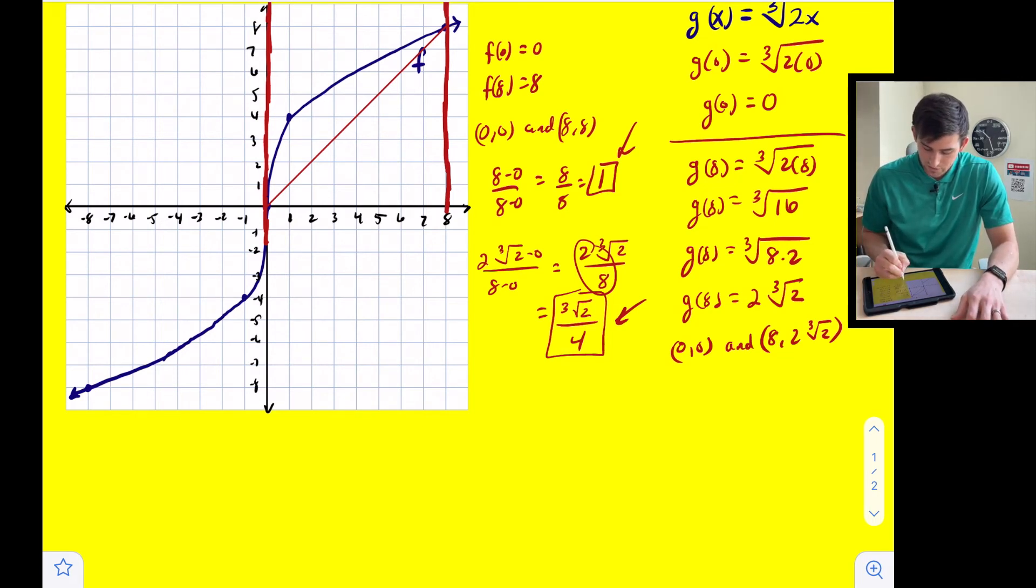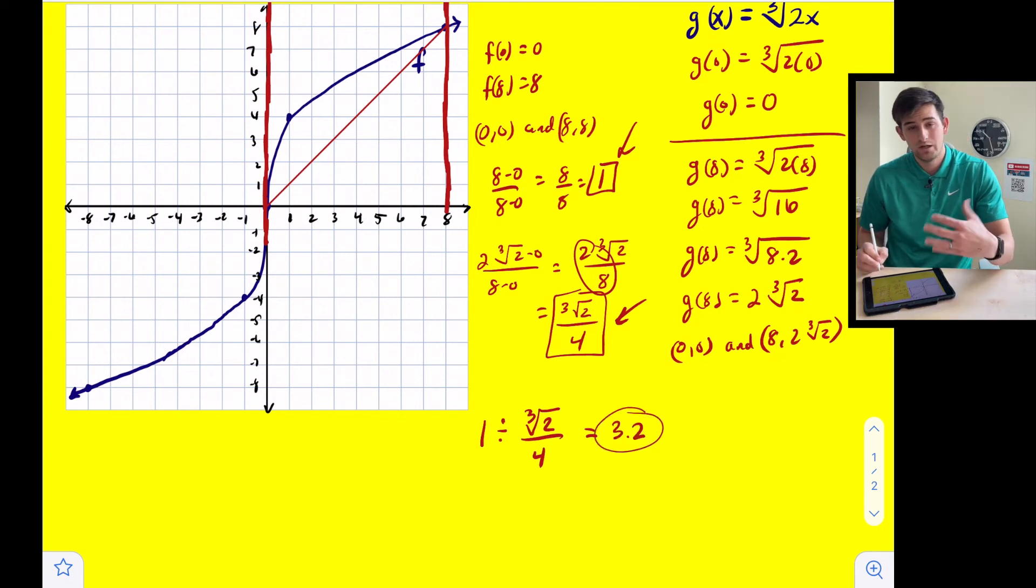Okay, so if I compare, we could do the average rate of change of m, which is 1, and divide it by the average rate of change of our g function. So if we do this in our calculator, we plug it in, we're going to get 3.2 approximately.